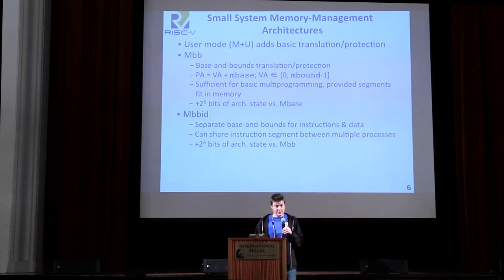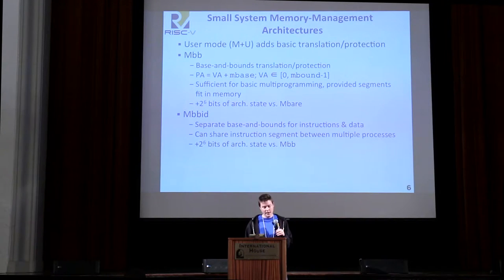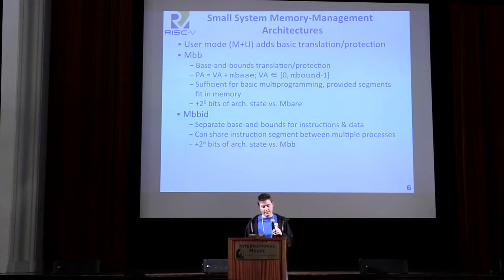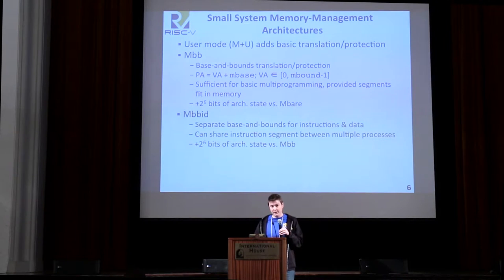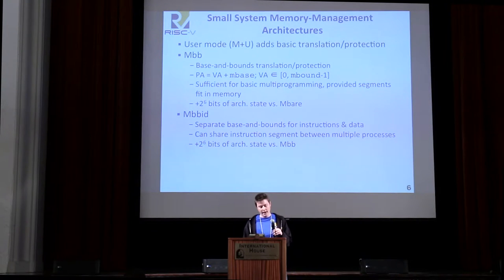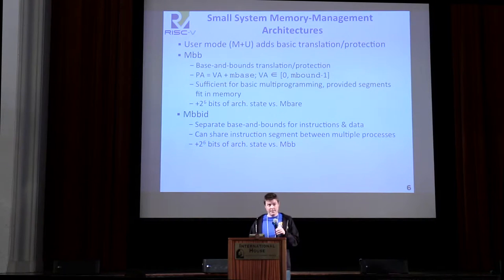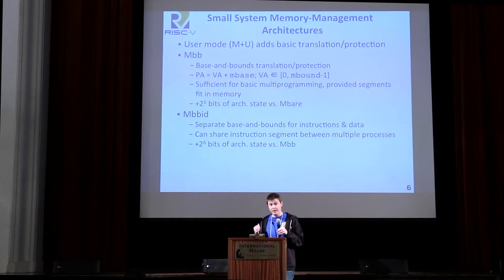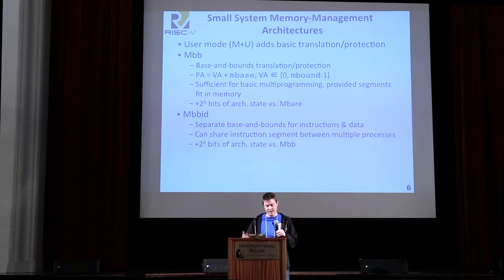We also defined something a little bit more sophisticated: a dual base-and-bounds system where instructions and data are translated separately from each other. The main advantage is that you can share code segments between programs — the Cray supercomputers used this pretty effectively. You can multi-program with these to a great degree as long as all the memory for the programs fits in physical memory at any given time. As compared to a page-based virtual memory system, address translation and protection are very cheap here because it's just addition and comparison, not TLB lookups and misses.